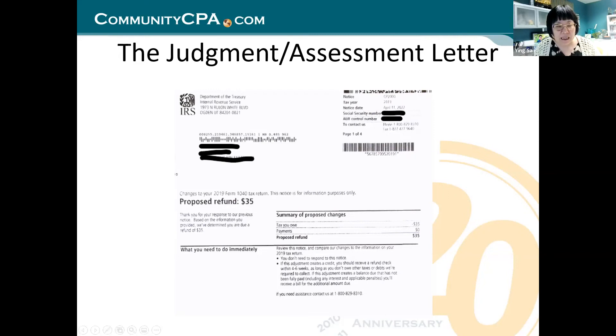This is why CP2000 is so important — you cannot ignore it. You can't say, 'It says it's not a bill, so why would I care?' It will become a bill. If you don't respond in 30 days, it becomes a notice of deficiency, which means you are in default and owe IRS money officially. When you get a notice of deficiency, you have 30 days to appeal. You must go to appeal, and if you can't settle with your appeal officer, you go to tax court — a route you do not want to take.